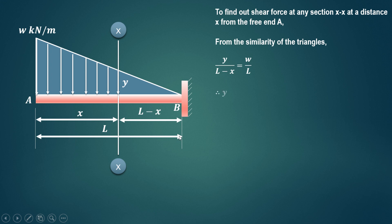We get the value of Y as W upon L multiplied by (L minus X). Expanding: W by L into L gives W, and W by L into X gives W by L times X. So Y equals W minus (W/L)X. We can use either this form or the expanded form for further simplification.